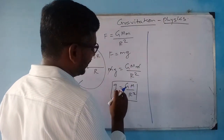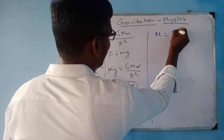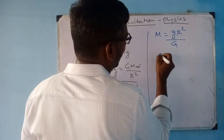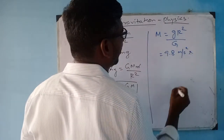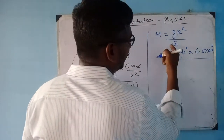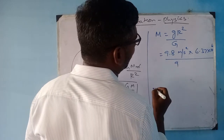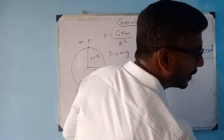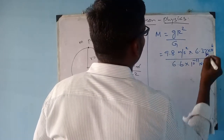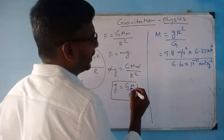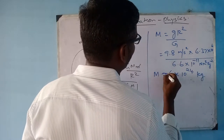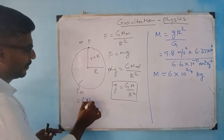From the relation g = GM/R², mass M equals g·R² divided by G. You know the value of g is 9.8 m/s², radius is 6.37×10⁶ m, and gravitational constant G is 6.6×10⁻¹¹ N·m²·kg⁻². Solving this, I get the mass of the Earth approximately equal to 6×10²⁴ kg.